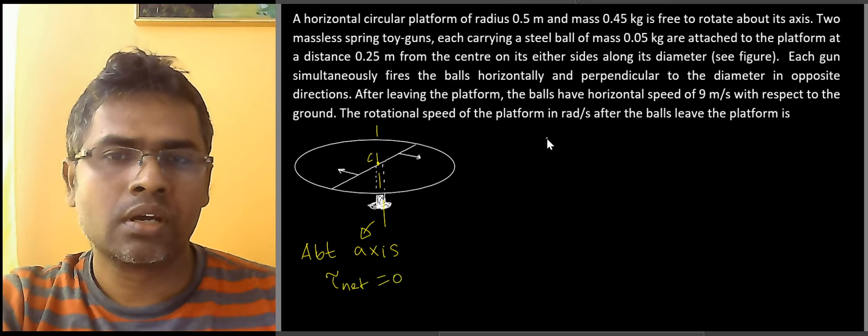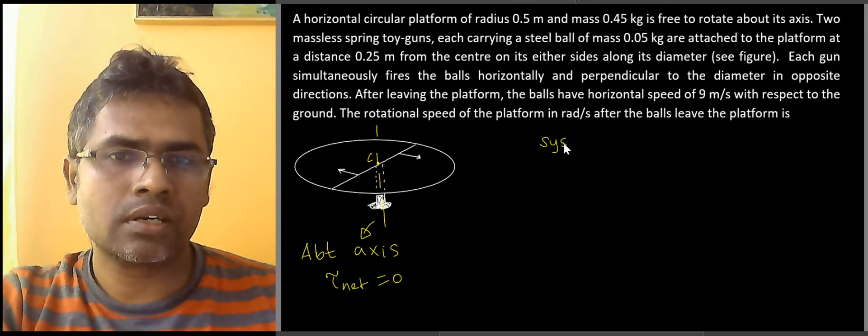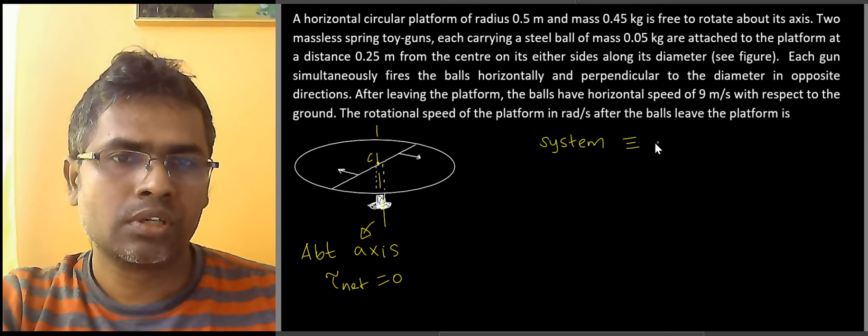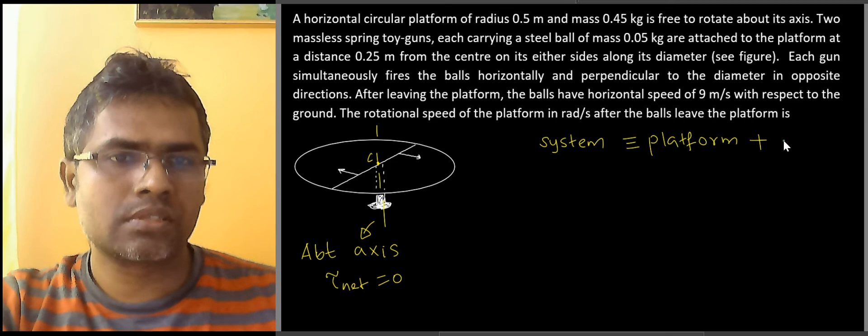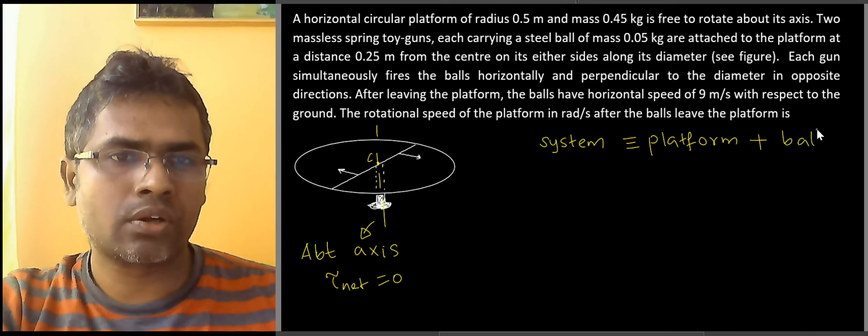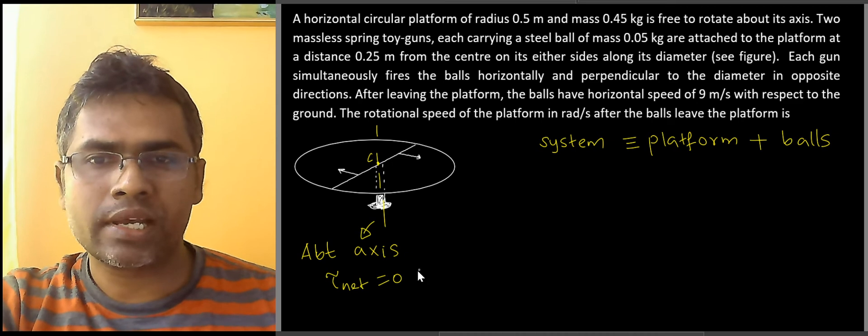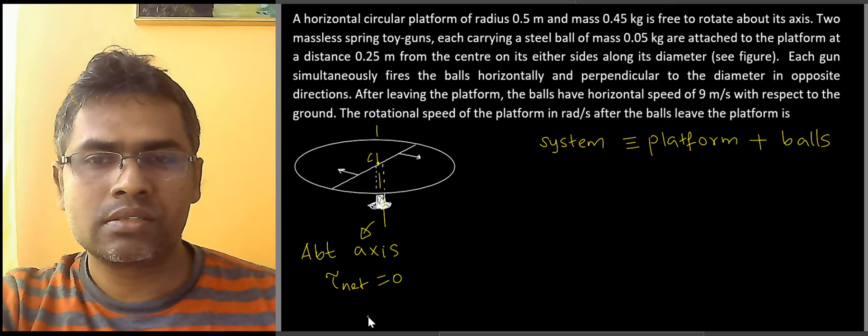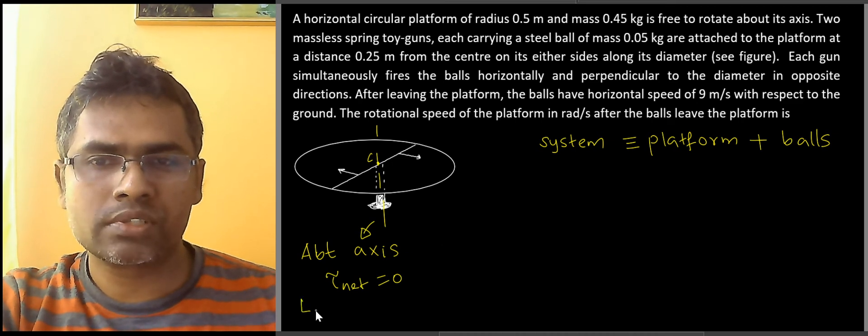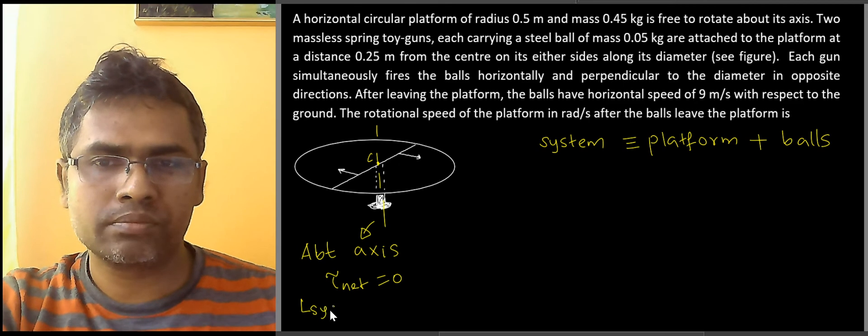So what is our system here? If I consider our system as platform plus the balls leaving the toy guns, the net torque about that axis is zero. So that means the angular momentum of the system must be conserved.